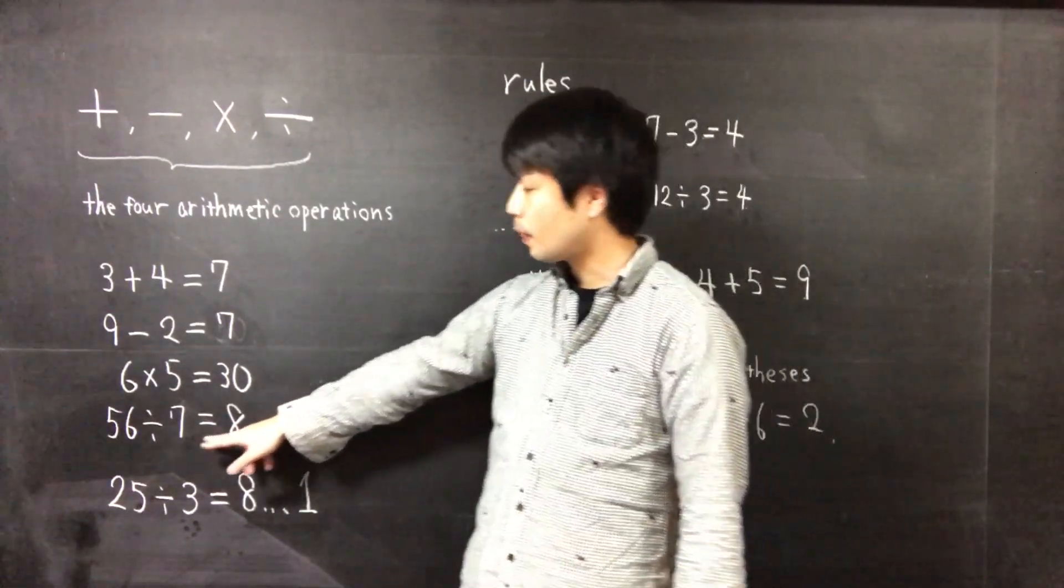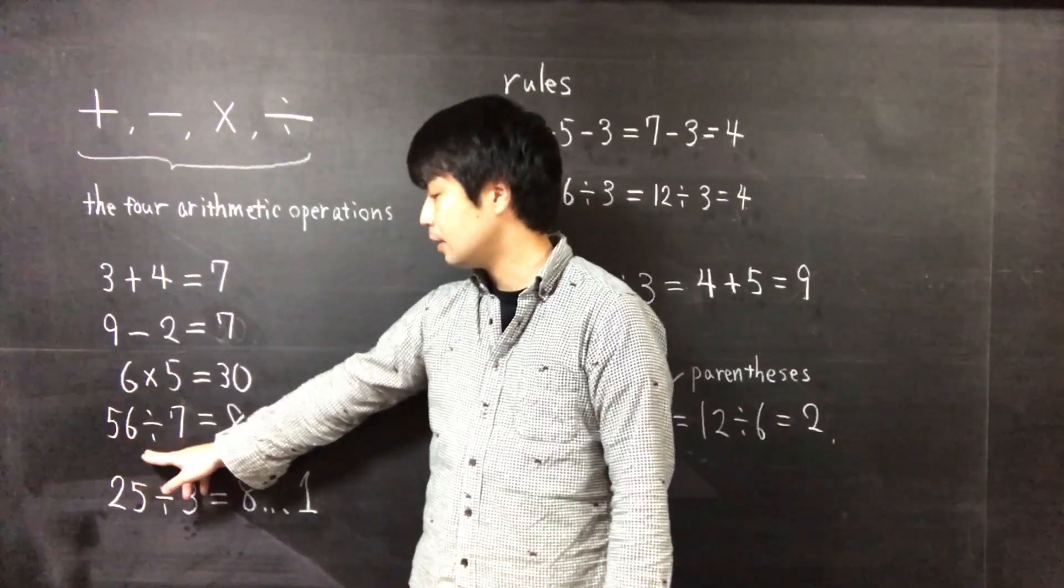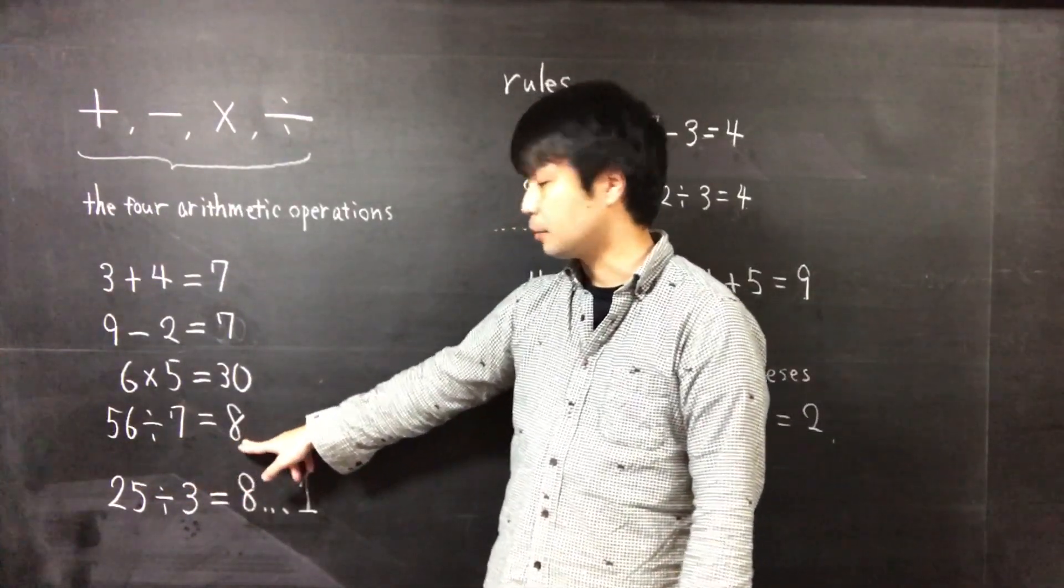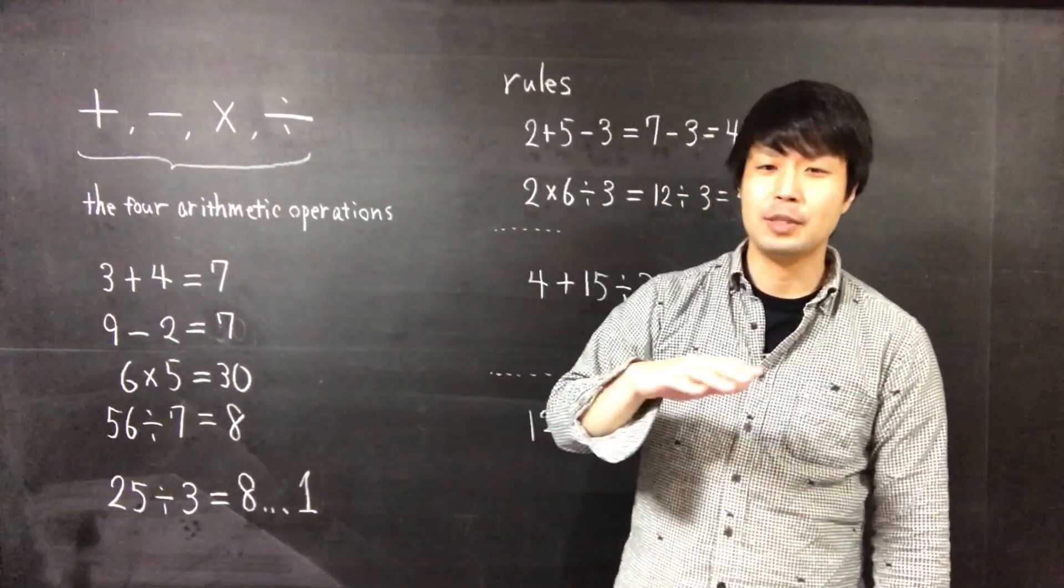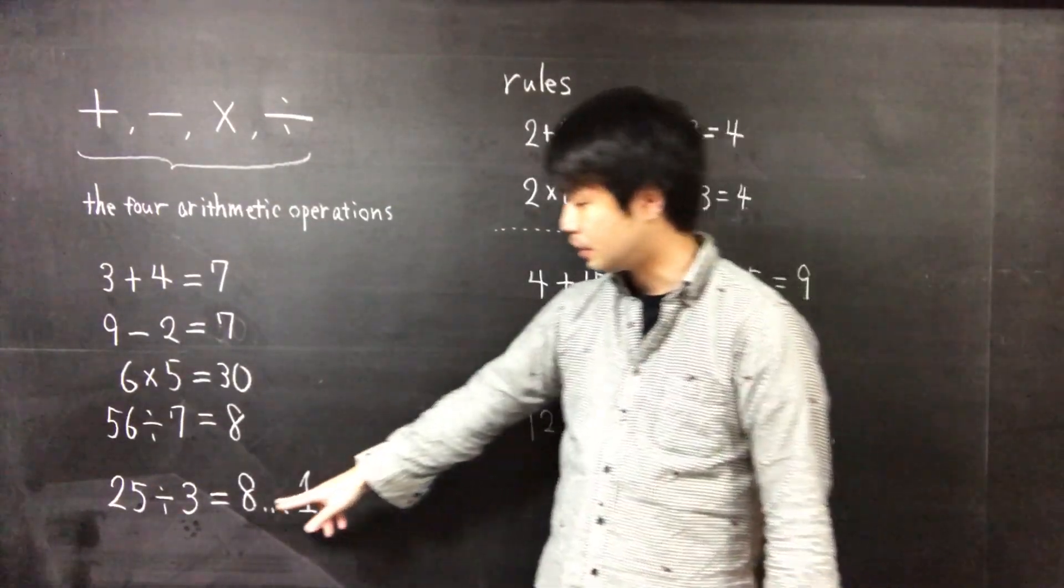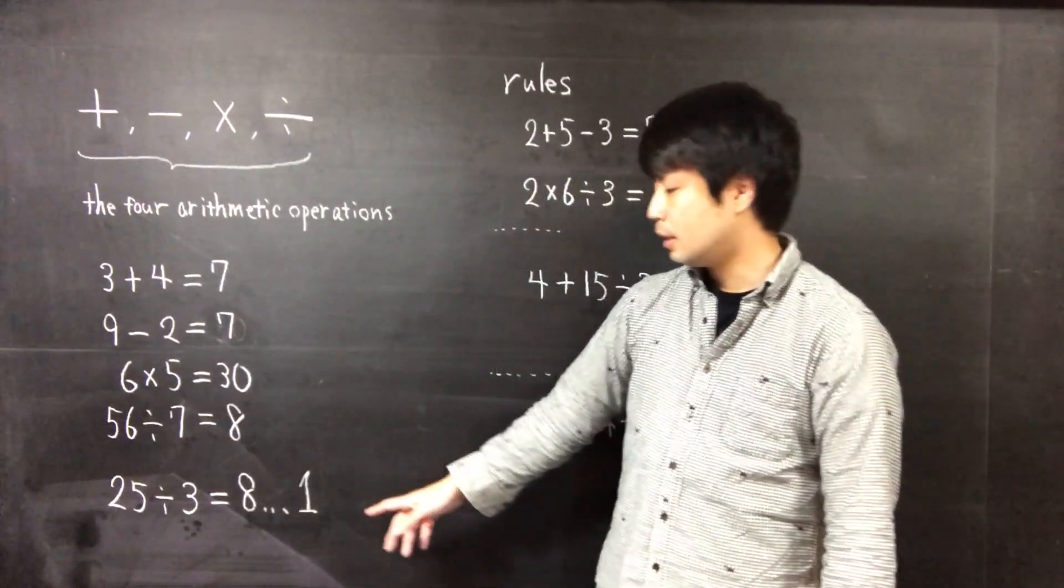This is multiplication: 6 times 5 equal to 30. This is kind of division: 56 divided by 7 equal to 8.